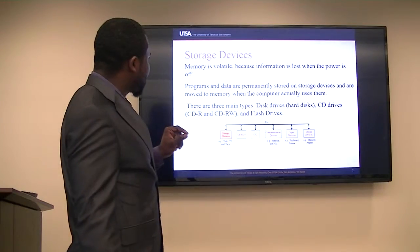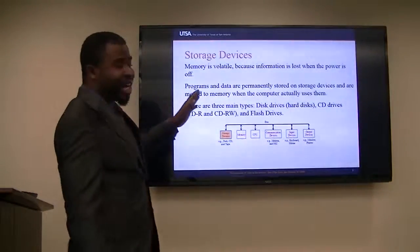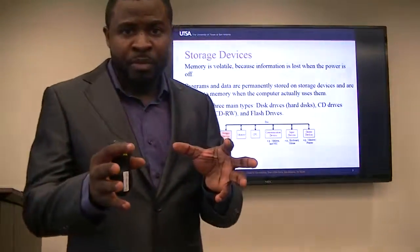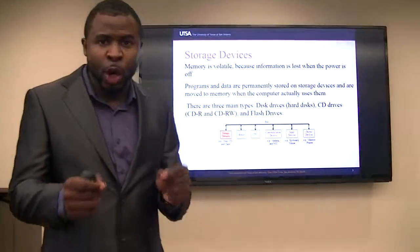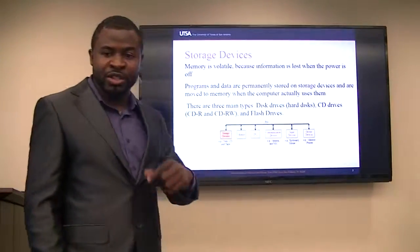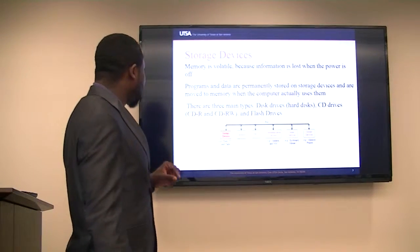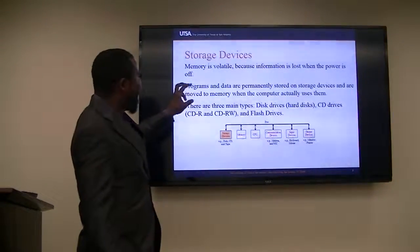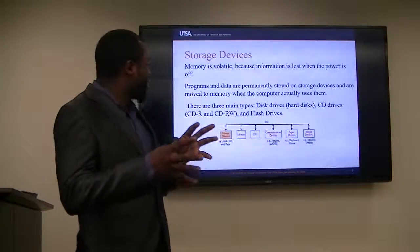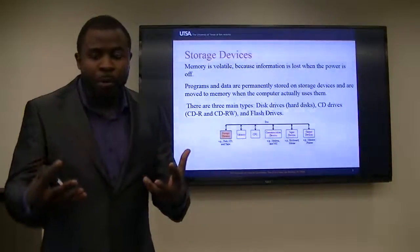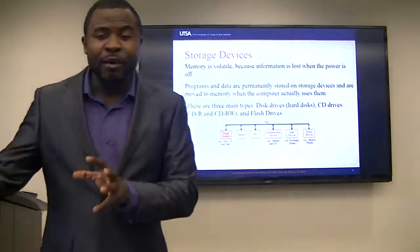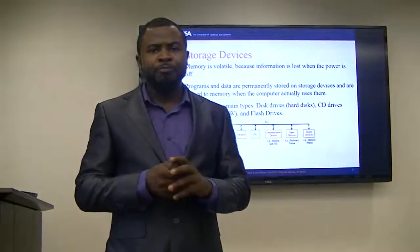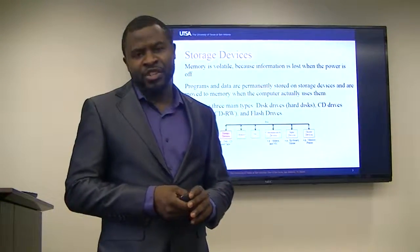Storage devices — again, memory is volatile. When you power off the computer, your information can be lost. If you didn't write it to the hard disk — if you didn't hit Control+S or save — your information will be lost. Programs and data are stored on permanent storage devices, and when you open an application, that information and its instructions get loaded into the computer to run by the CPU.